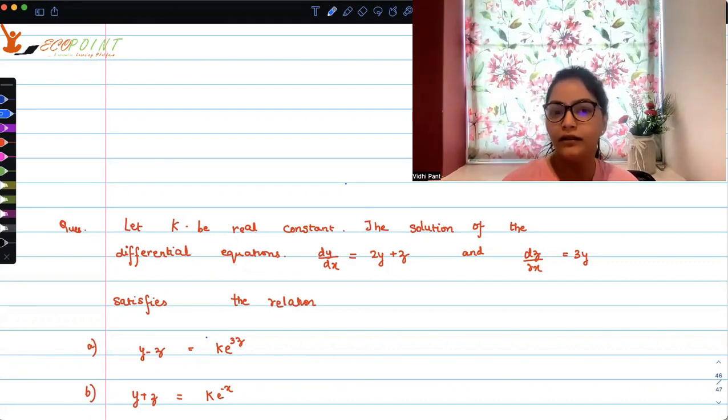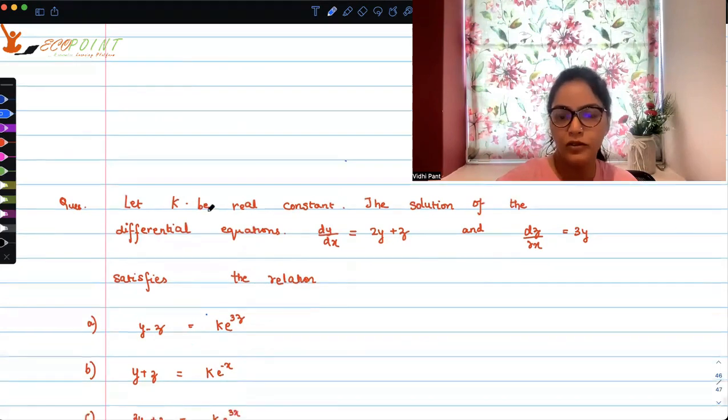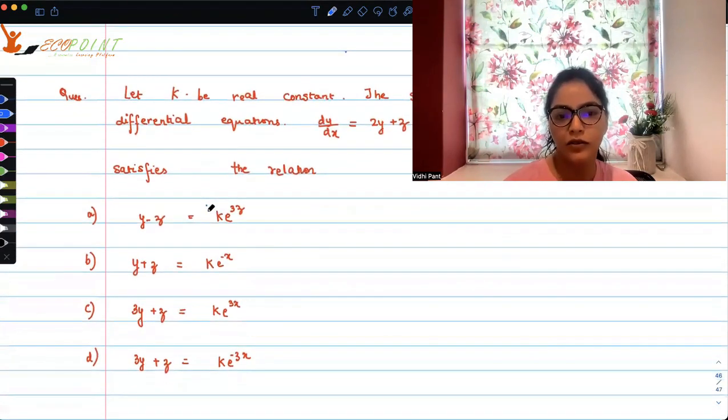Let k be a real constant. The solution of differential equations dy/dx equals 2y plus z and dz/dx equals 3y satisfies the relation. You have four options out of which we have to figure out the best option.